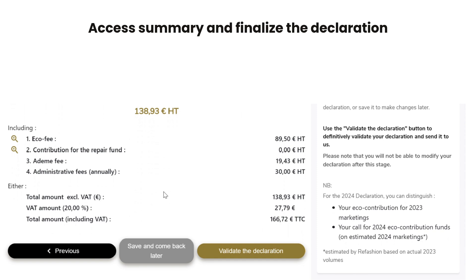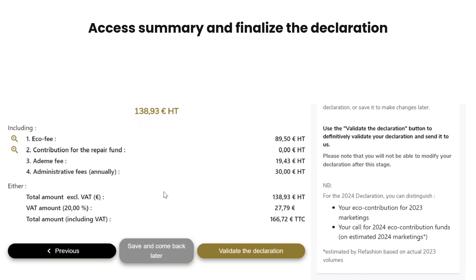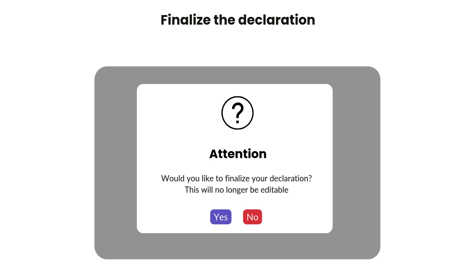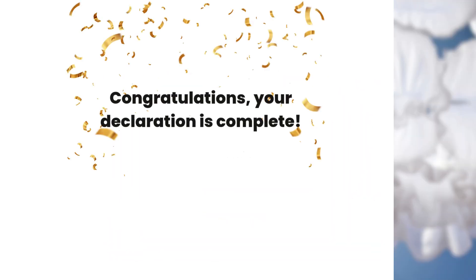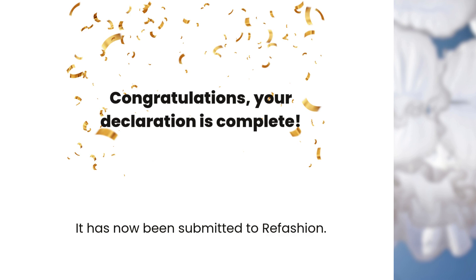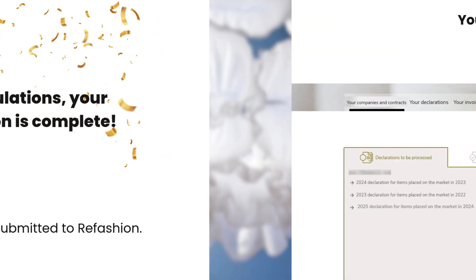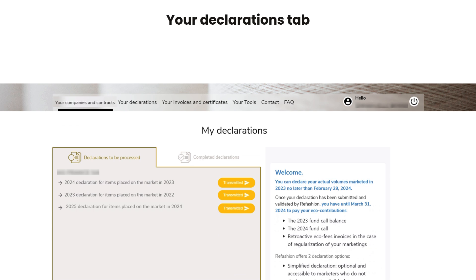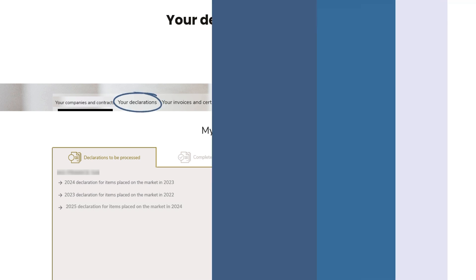At the bottom of the page you have the option to save and come back later. If you are ready to finalize your declaration, click 'validate the declaration' to confirm its accuracy. If you choose yes, the declaration will be finalized and no further edits will be possible. Congratulations, your declaration is complete and has been submitted to Refashion. You can find all your declarations along with their processing status in the your declarations tab.